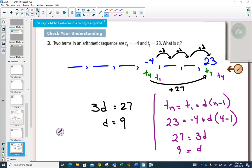Some people like the formula, because it helps them out that way. Either way, we've now got d is equal to nine.